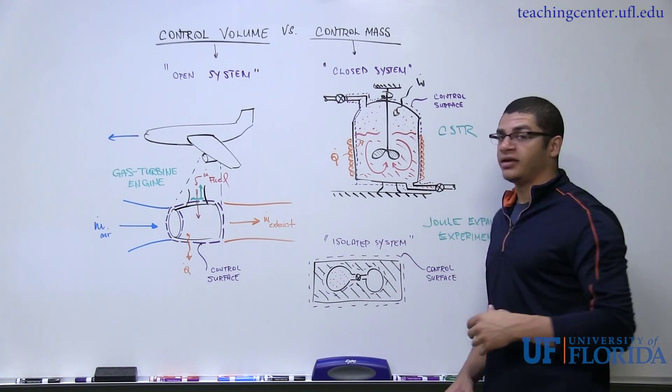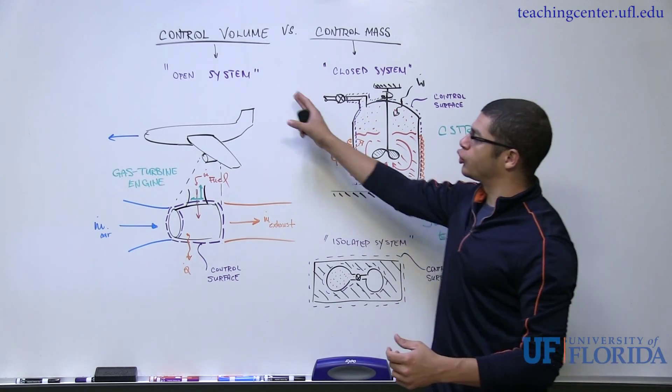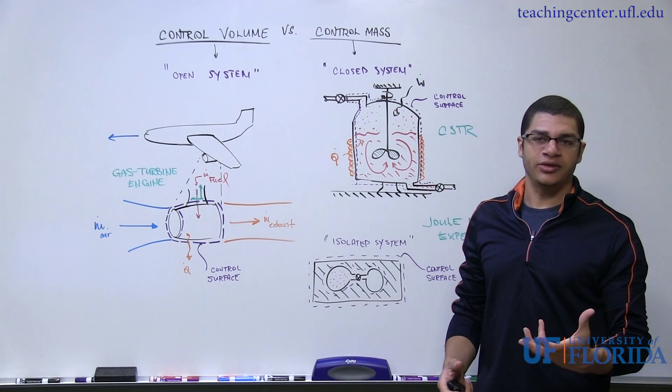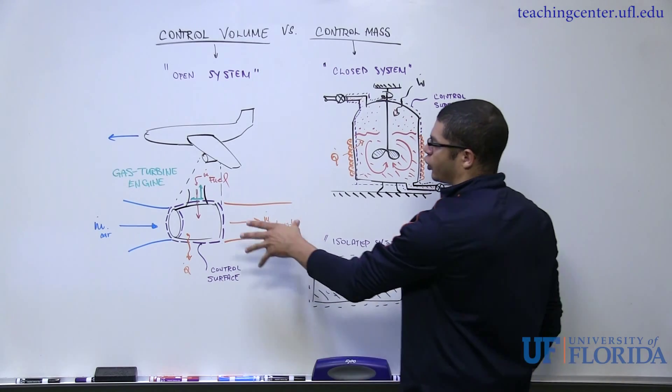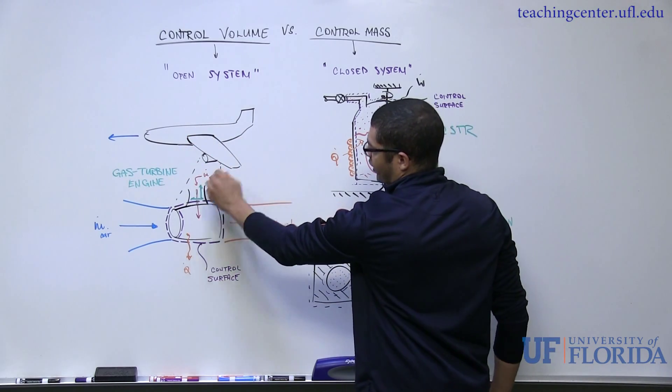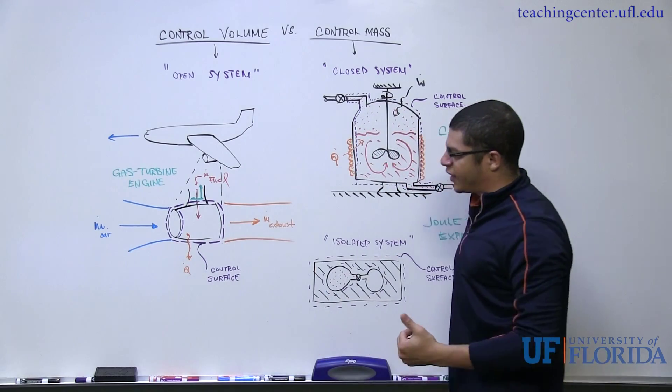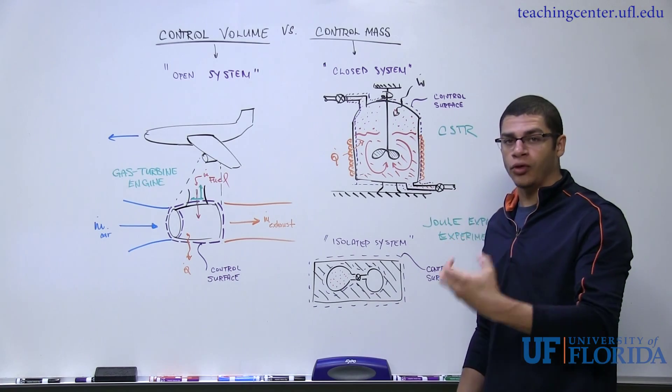Now, if we relax the mass constraint, we arrive at what's called a control volume, or an open system. An open system is pretty intuitive, or should be at this point. And what I've drawn is an aircraft and zoomed into its jet engine or gas turbine engine, and drawn a few of the interactions for this particular control volume.